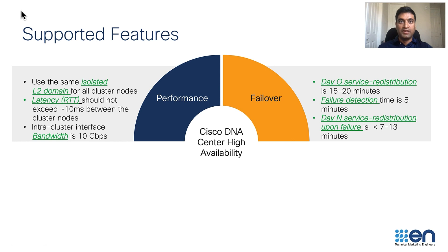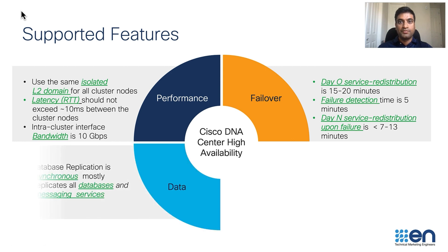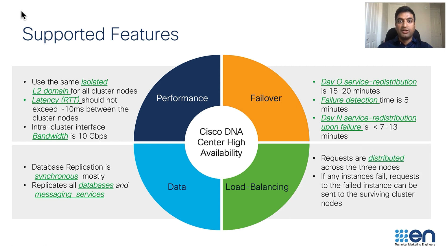When high availability is configured on day zero, the service redistribution between the cluster nodes will take around 15 to 20 minutes. When one of the cluster nodes fails, the HA framework takes five minutes to detect the failure, after which the services on the failed node will be restarted on the other two cluster nodes. Anytime the HA framework determines that a change on a cluster node has taken place, it synchronizes this change with the other nodes. All the databases and messaging services are replicated. All incoming requests are load balanced across the three cluster nodes, thereby preventing more load on a single cluster node.